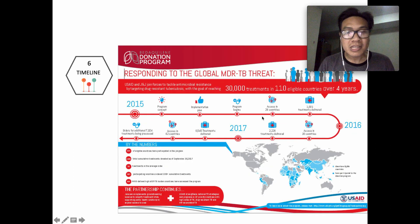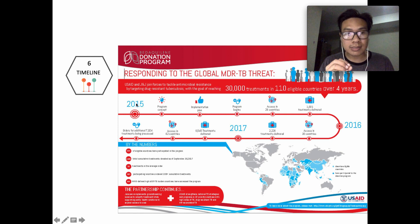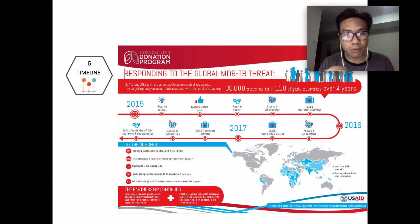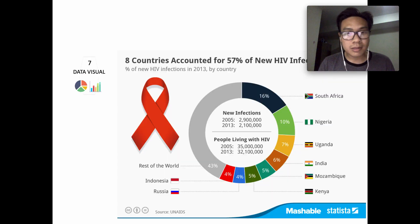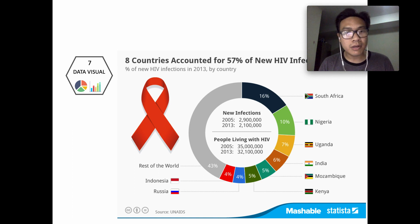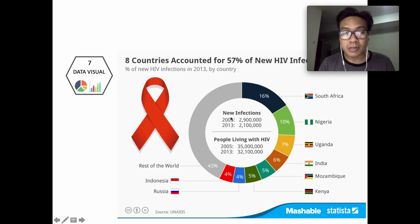Number six, timeline. This is very similar to the flowchart, but it corresponds to time. If you have a history or a set of actions and you want to describe them based on time, this is a very effective way to do that. The last type is data visualization, which is a very common way of presenting information in the medical field.